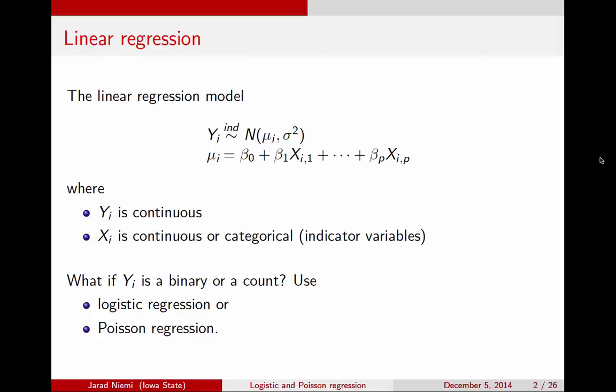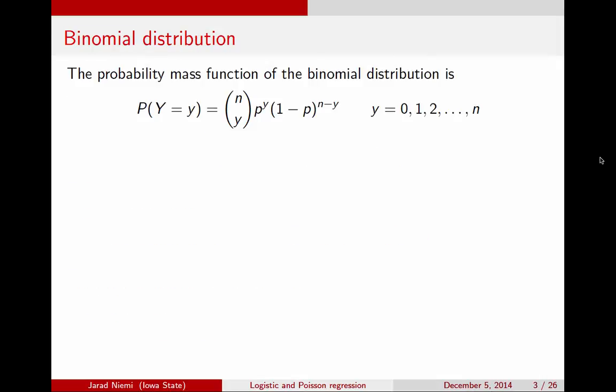Before we get too far into the regression aspect of these techniques, we should probably talk about the two distributions that underlie them. First, we're going to talk about the binomial distribution, which underlies logistic regression. The binomial distribution is a distribution on discrete data. One of the key pieces is the support for this random variable. The support here are the integers up to some known maximum n.